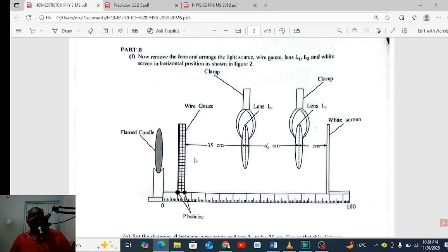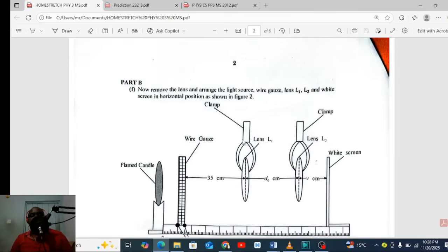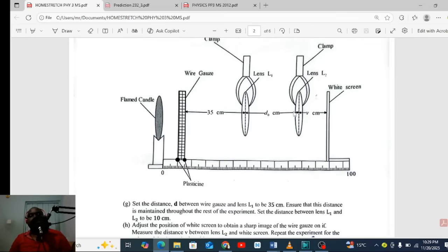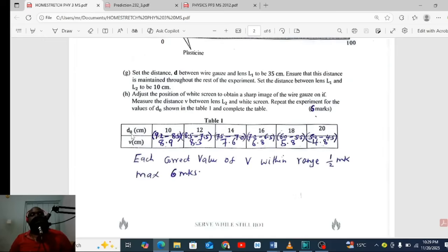Part B will contain something of this nature. You will be required, this is the distance d0 from here. You will be moving these lenses here, this concave or convex lens. Set the distance d between where it goes and lens one to be 20, 35, all of those four instructions. What I am interested in is this table. This table, we will be given d in centimeters: 10, 12, 14, 16, 18, to 20. So you have v.